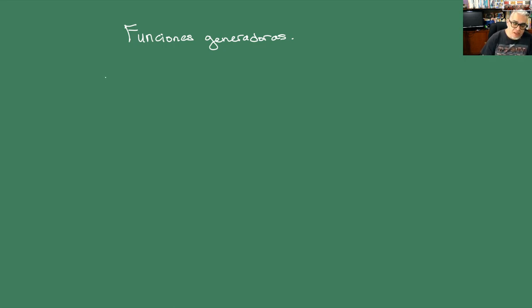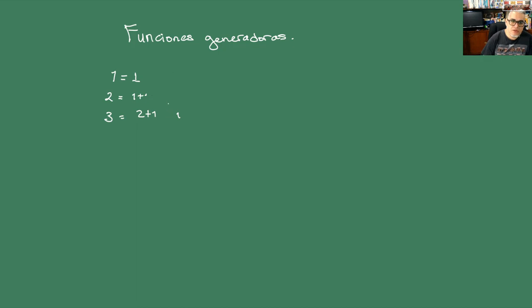Por ejemplo, el 1 no tiene más partición que el 1 mismo. El 2 lo podemos escribir como 1 más 1. El 3 lo podemos escribir como 2 más 1, y como 1 más 1 más 1. Tenemos 2 posibles particiones a partir de los números anteriores.